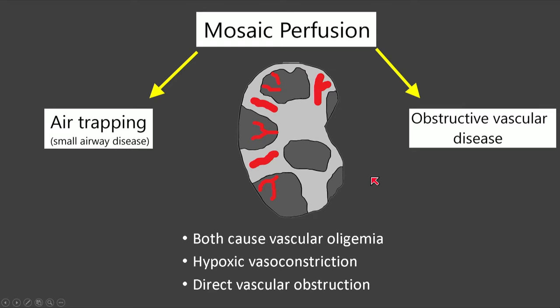It's important to recognize that mosaic perfusion means vascular oligemia, which could be on the basis of air trapping or obstructive vascular disease. Many people see the word 'perfusion' and automatically associate it only with obstructive vascular disease — that's incorrect. Both air trapping and obstructive vascular disease result in vascular oligemia.